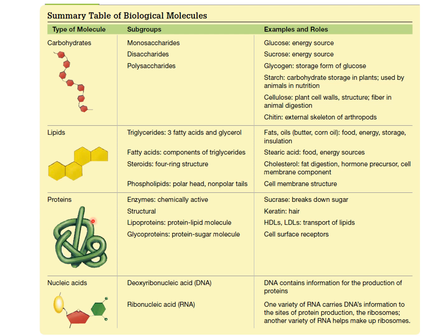And then the nucleic acids: you've got a sugar — a ribose or deoxyribose pentagon — a nitrogenous base, and a phosphate. The two major players are DNA (deoxyribonucleic acid) and RNA (ribonucleic acid), involved in information storage. You store the amino acid sequence of a protein in DNA, and to get that signal out where it can be manufactured into a protein, we use RNA.